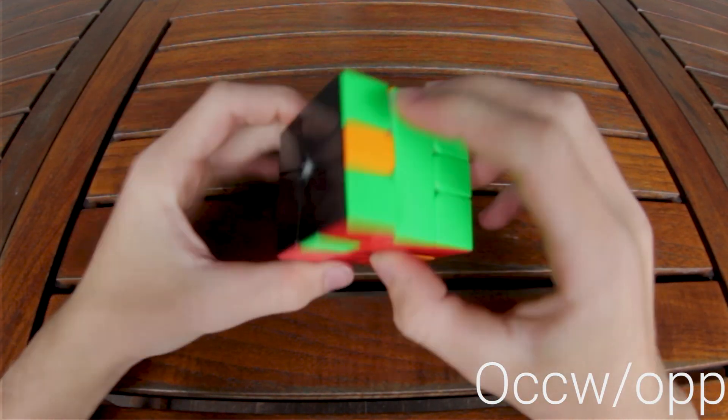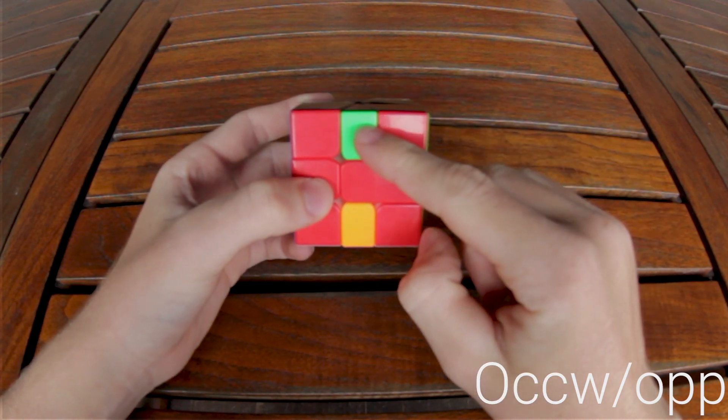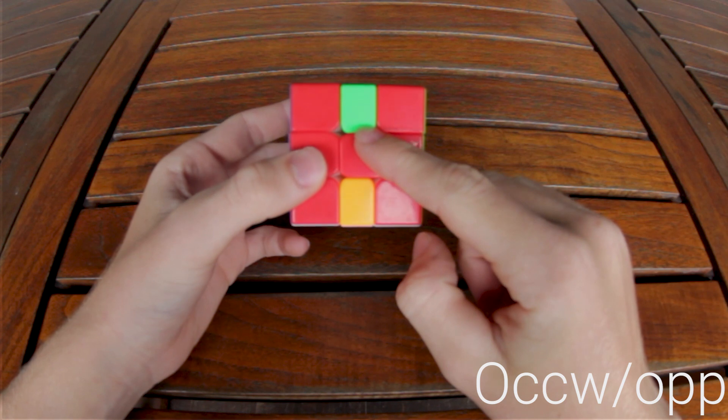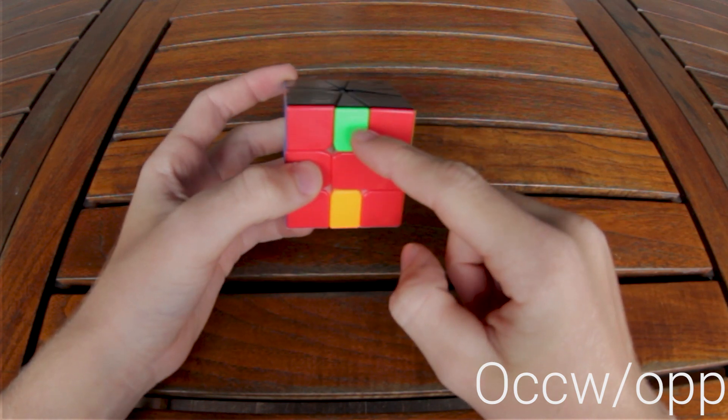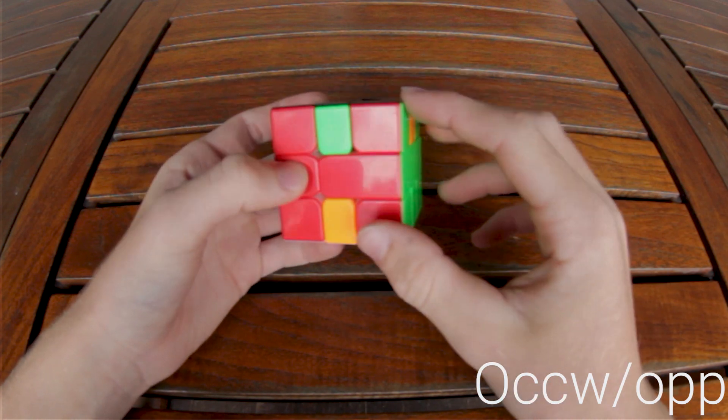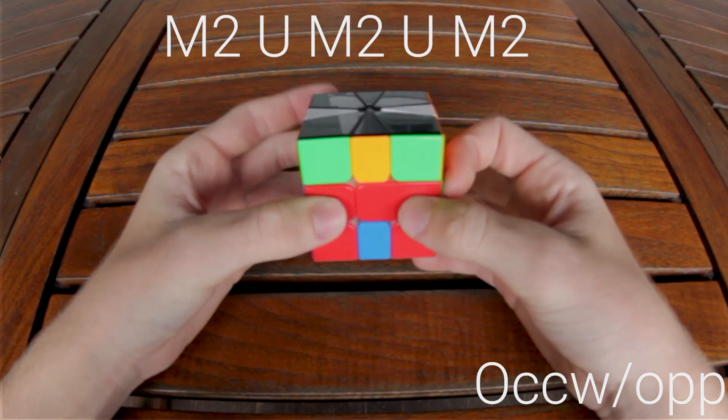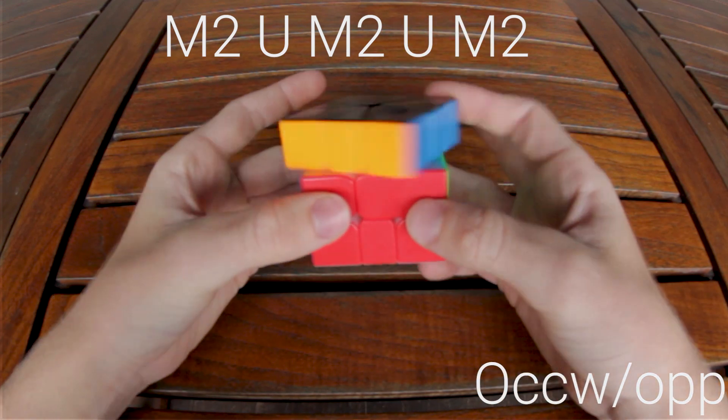The next case is O opposite. You check what color the front edge is. In this case it's green, and the green needs to go to this side. So your first U move will be in the opposite direction. So you do M2, U, M2, U, M2, and then AUF.